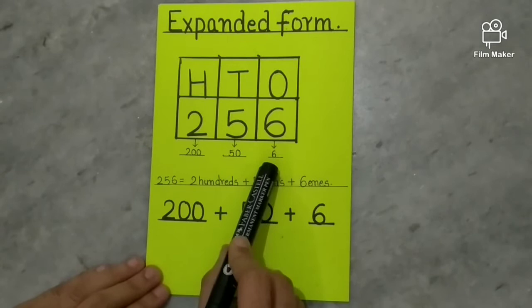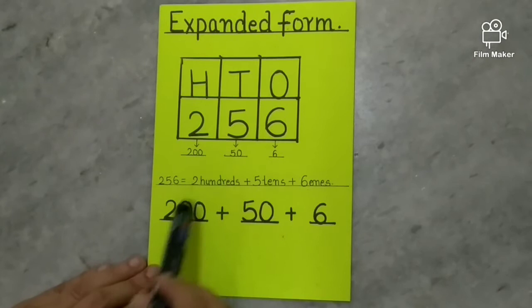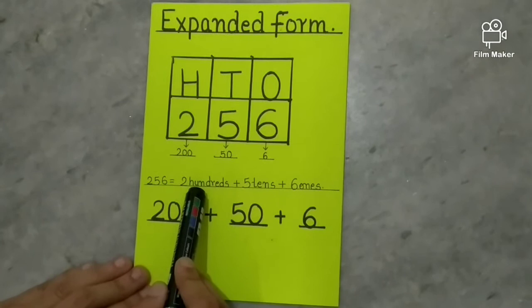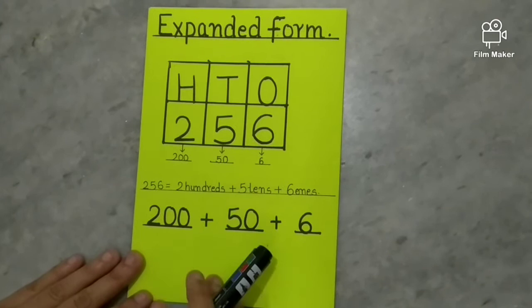Place value of 5 is 50, and place value of 2 is 200. So 256 is equal to 200 plus 5 tens plus 6 ones.